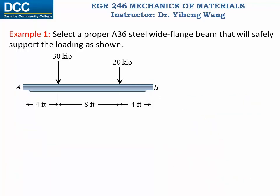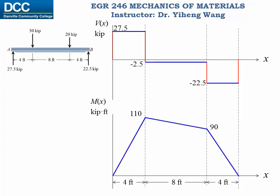So as we've done many times now, we start this problem with the free body diagram and then determine the support reactions. Then we construct the internal shear force diagram as well as the internal bending moment diagram. From these diagrams we can determine that the maximum internal shear force is 27.5 kilopounds and the maximum bending moment is 110 kilopound-feet, occurring at a location 4 feet from the left end. The question is how do we use this information to decide on a sectional shape for this beam?